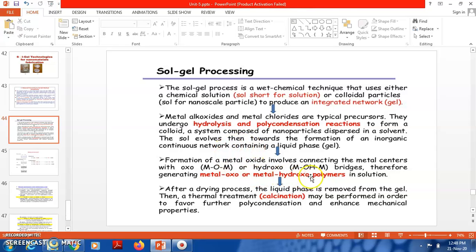Formation of a metal oxide involves connecting the metal centers with oxo (metal-oxygen-metal) or sometimes hydroxide (metal-OH) bridges, therefore generating metal-oxo or metal-hydroxy polymers in solution. After the drying process, the liquid phase is removed from the gel.